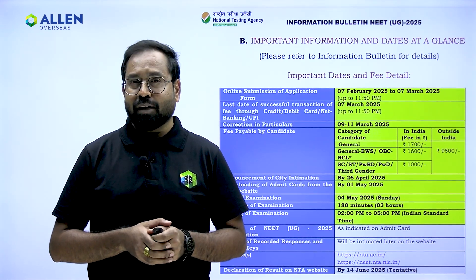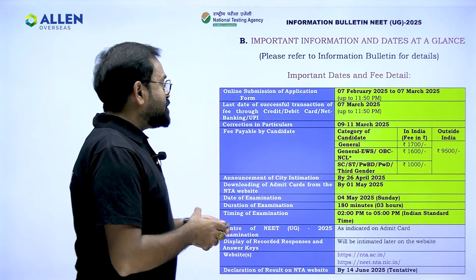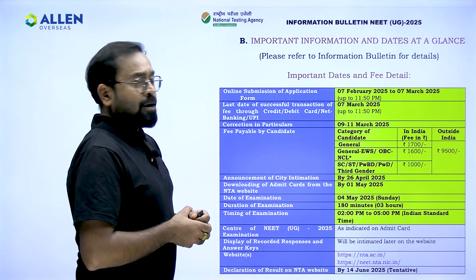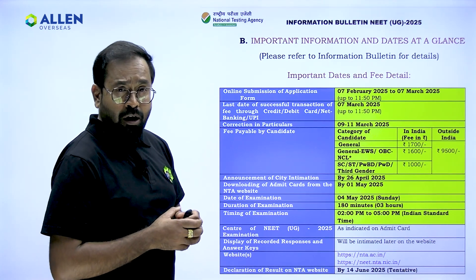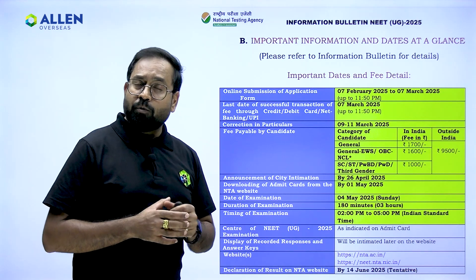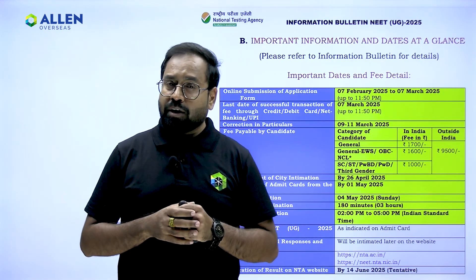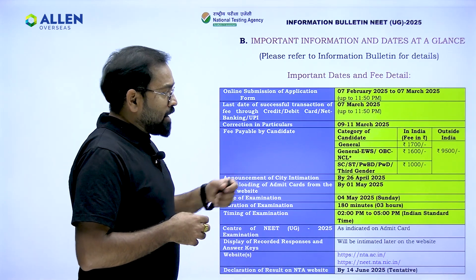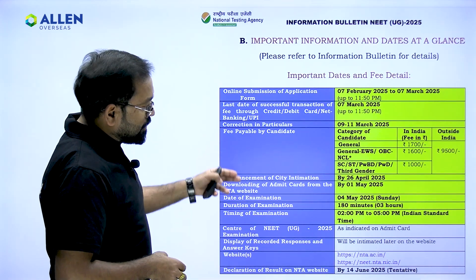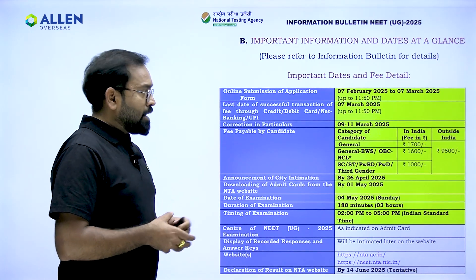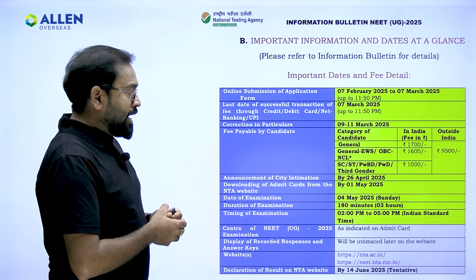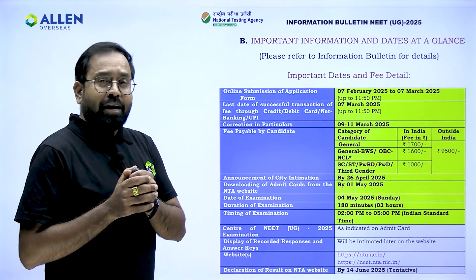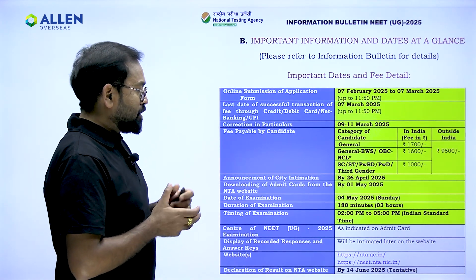The application process started on 7th of February and will last till 7th of March 2025. The correction window will open on 9th of March and will close on 11th March 2025. Please take a screenshot of this slide because it contains essential dates, fee details, examination dates and shifts, and the websites, so you don't miss out on any important detail later on.